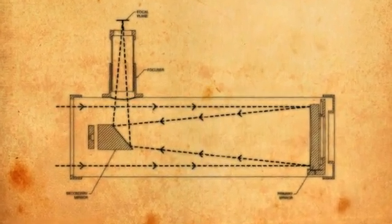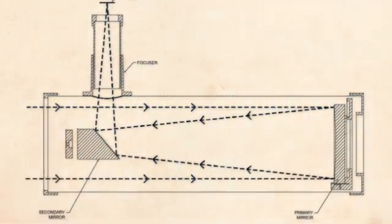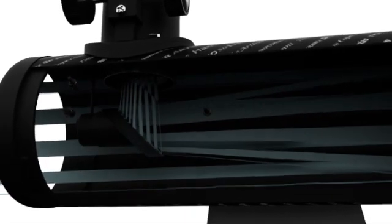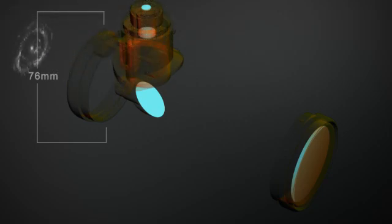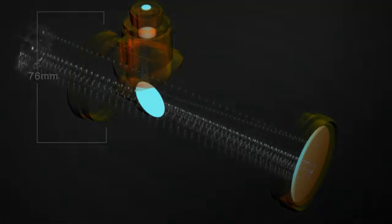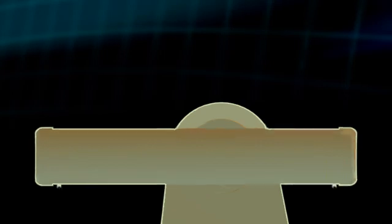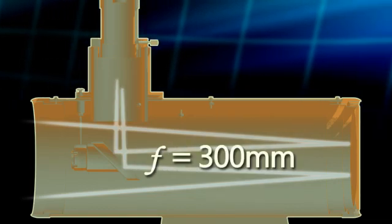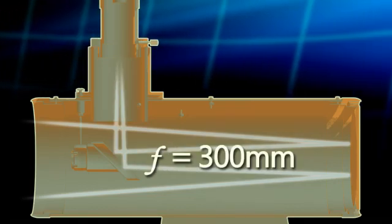Celestron's FirstScope is a Dobsonian-style reflector telescope. Reflector telescopes use a combination of curved mirrors instead of lenses to reflect light and form an image. Its 76mm or 3-inch aperture allows FirstScope to capture plenty of light to resolve even faint deep sky objects. The focal length is the distance light needs to travel inside the optical tube. Celestron's FirstScope features an impressive 300mm focal length for its portable size.